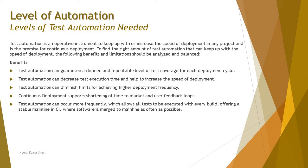Continuous deployment supports shortening the time to market and user feedback loops. Test automation can occur more frequently, allowing all tests to be executed with every build, offering a stable mainline in CI where software is merged as often as possible. These are quite common and familiar benefits of the level of automation required in an agile project.